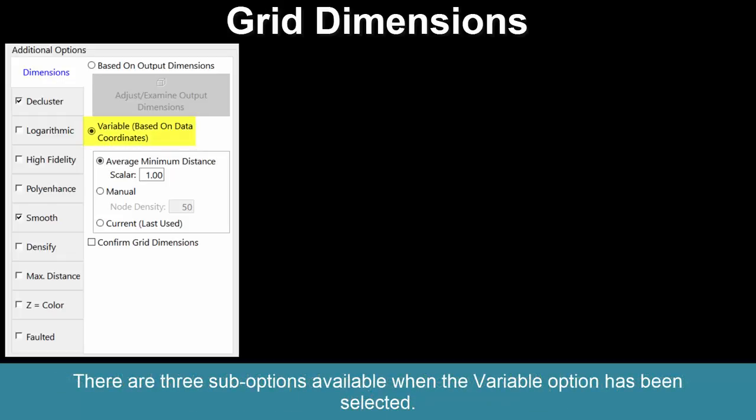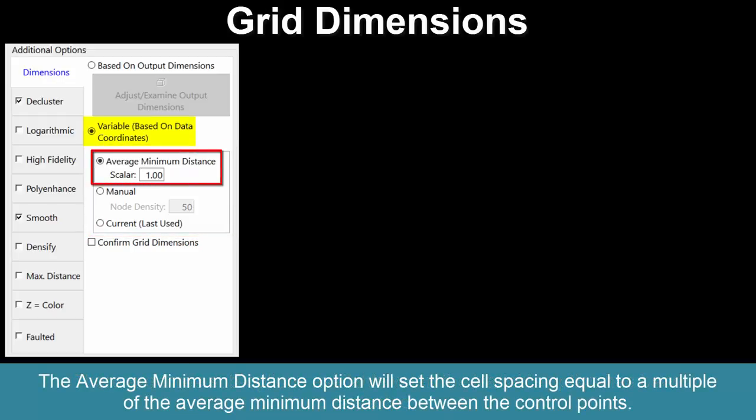There are three sub-options available when the Variable option has been selected. The Average Minimum Distance option will set the cell spacing equal to a multiple of the average minimum distance between the control points.